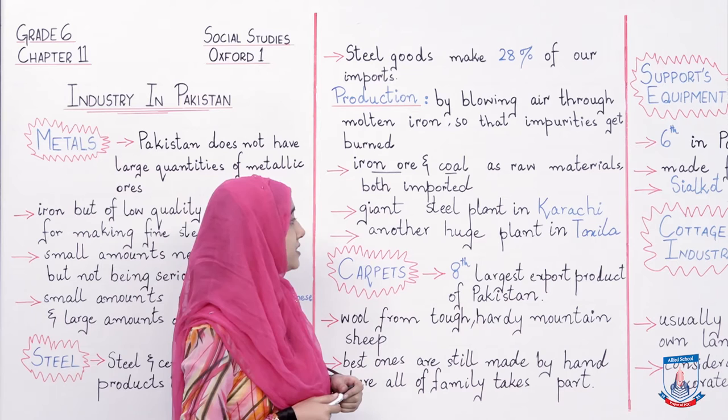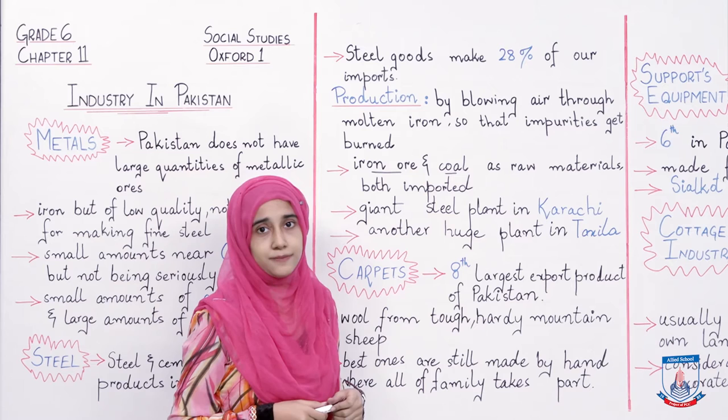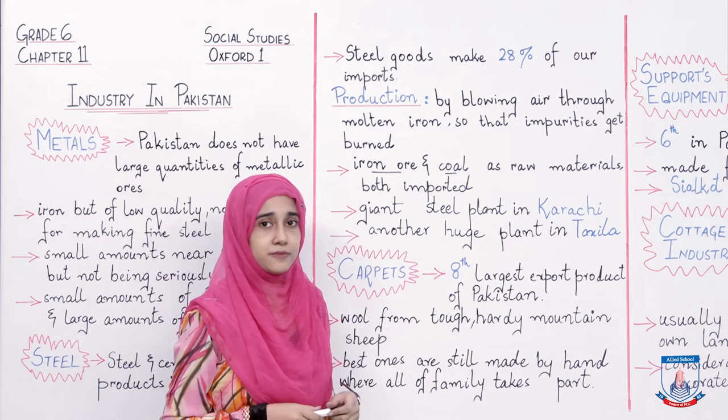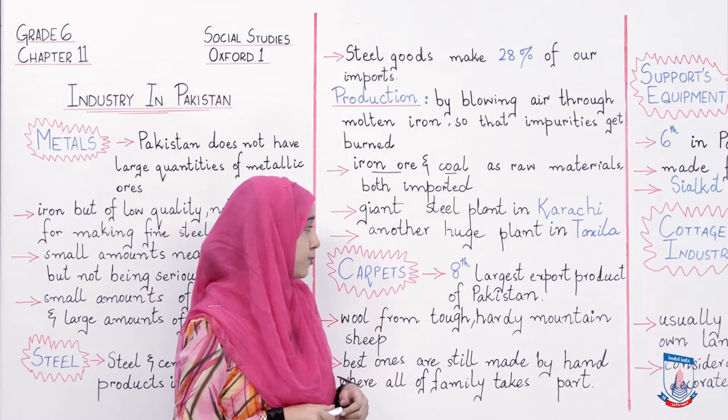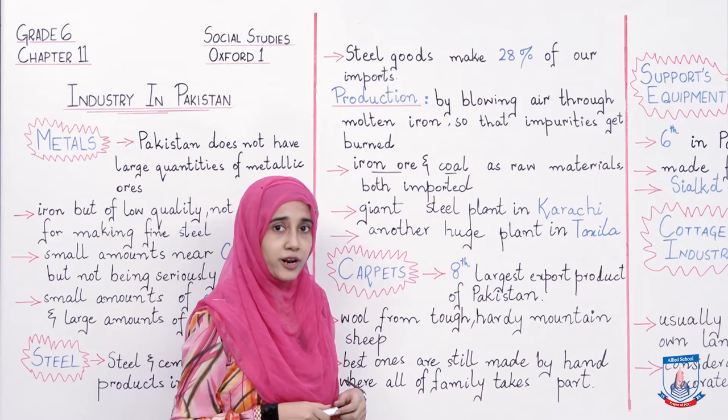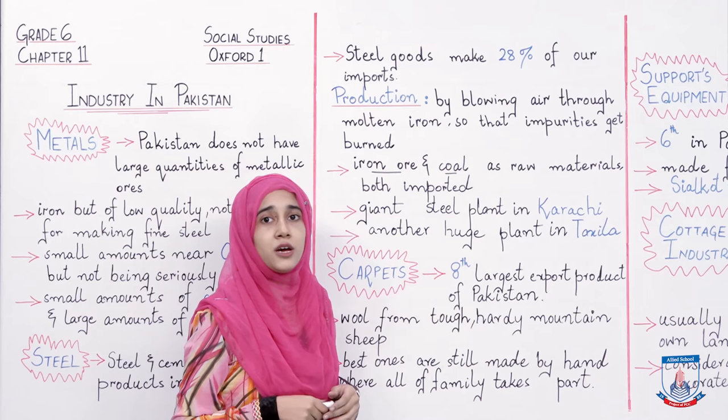There is another huge plant in Taxila, jo ke Chinese assistance se banaya gaya tha. Ab baat karte hain carpets ki. Carpets Pakistan ka aathwa sabse bada export product hai — yani ke Pakistan se jo products export ki jati hain, unme carpets ka number eight pe aata hai.